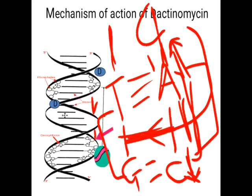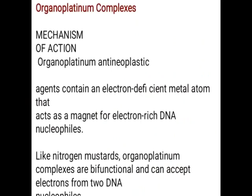Dactinomycin is responsible for the intercalation of DNA so that DNA inhibition takes place. It binds to the minor groove of DNA — these are the two parts (minor groups) where dactinomycin intercalates itself and binds to the DNA. That is the mechanism of dactinomycin.